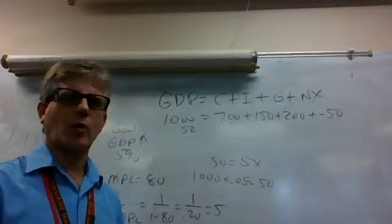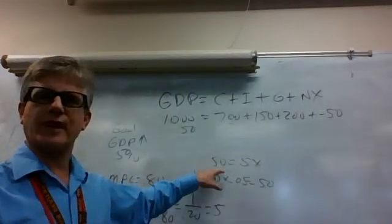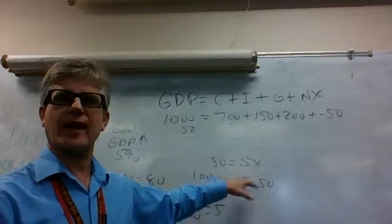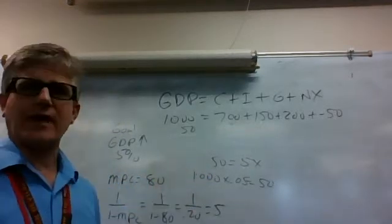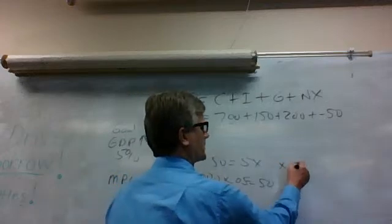Now we're going backwards, and what we're doing is we have our goal of $50, and then our multiplier is 5. What is our government spending? So if we do the division, 50 divided by 5, x equals 10.